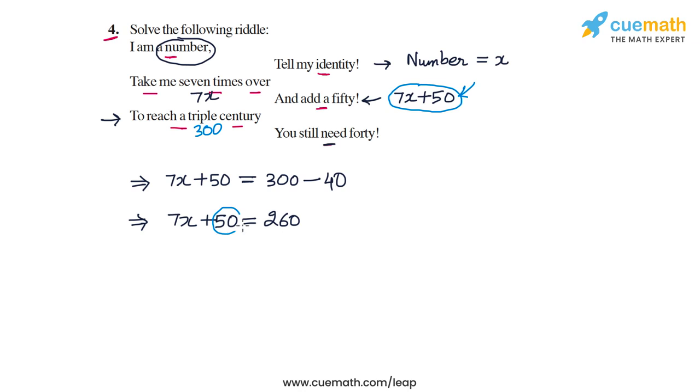Now, we can take this 50 and transpose it to the right side. We will get 7x is equal to 260 minus 50, which means that 7x is equal to 210.